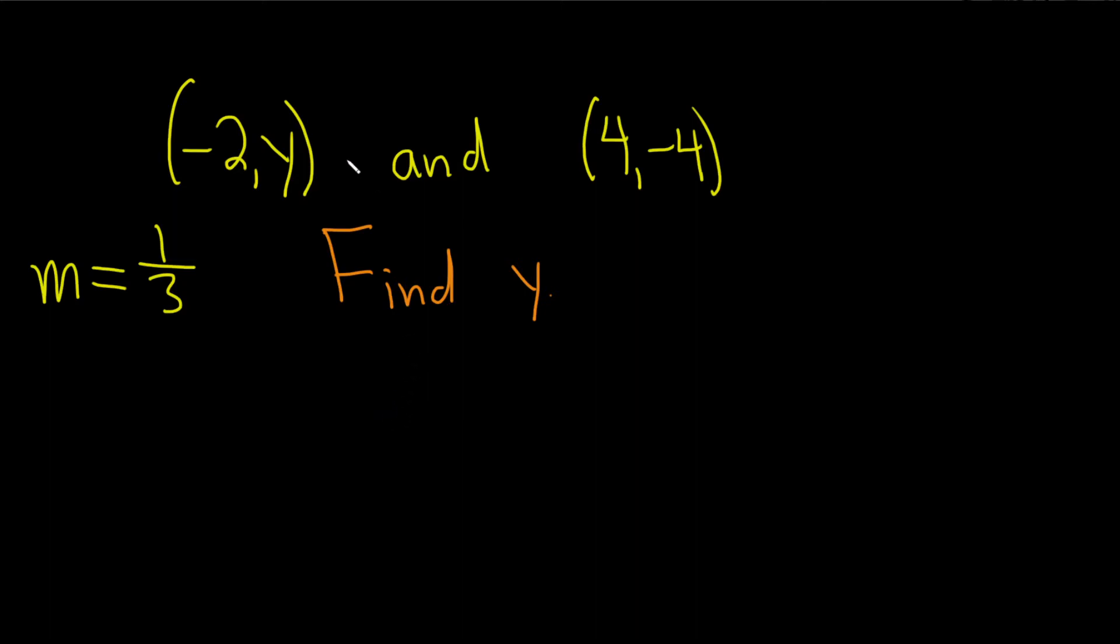In this problem, we're given two points on a line and the slope of the line, and we're asked to find the value of y, so it's a little bit backwards.